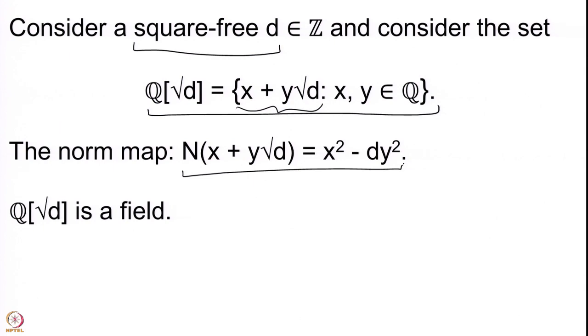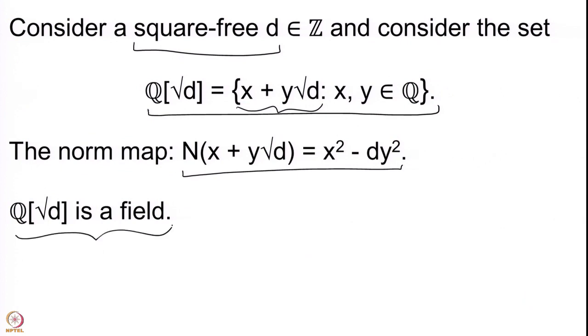There is a norm map defined on any such ring. This is a ring because we have addition and multiplication defined on the set. Addition gives a group structure, multiplication is associative, has identity, and satisfies distributivity. This is called a ring, and moreover with the help of the norm we see it is actually a field — meaning any non-zero element is invertible with respect to multiplication. So you can divide by any non-zero element in Q(√D) and remain in Q(√D).